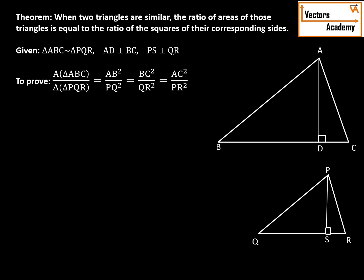So let's start with the proof. Now we have already seen that the ratio of the areas of two triangles depends upon their base and height. So area of triangle ABC upon area of triangle PQR will be equal to BC into AD, that is the base and the height of the first triangle, divided by QR into PS.